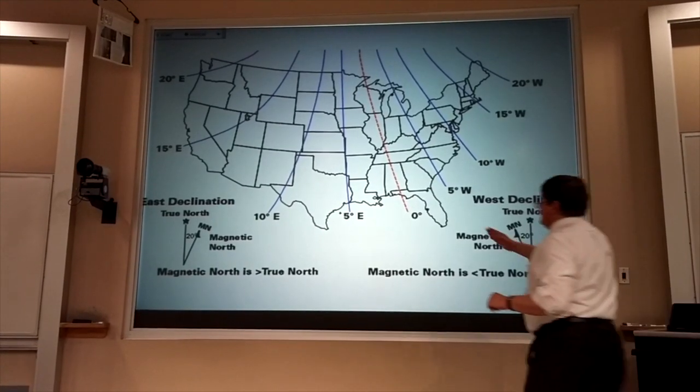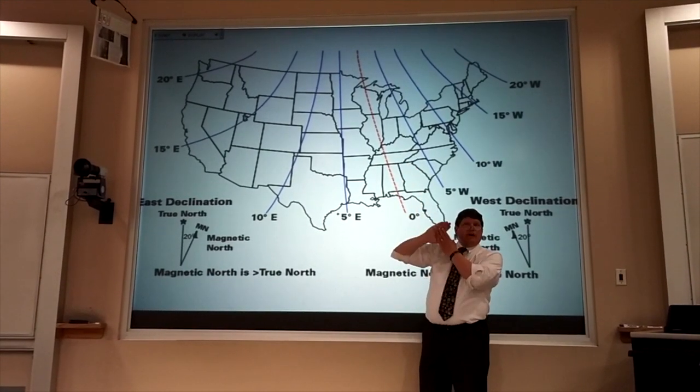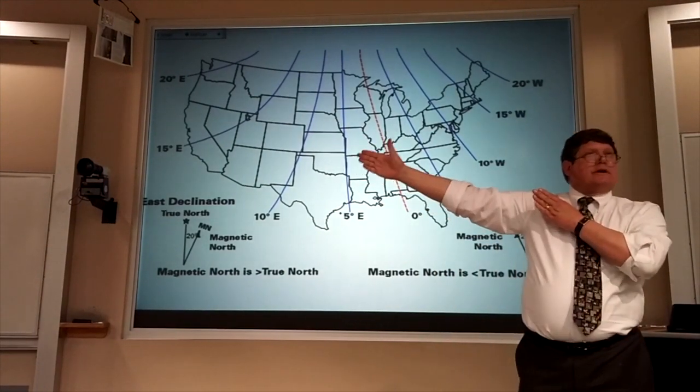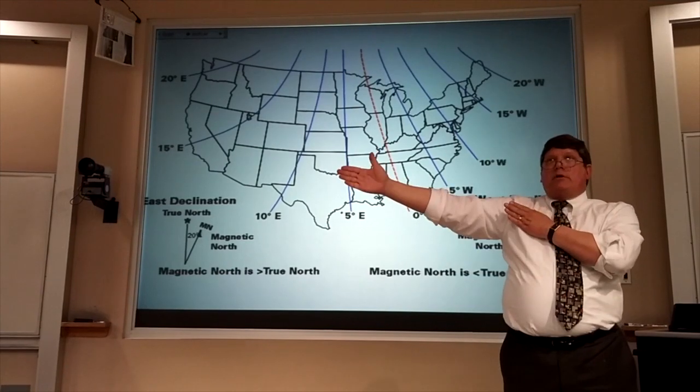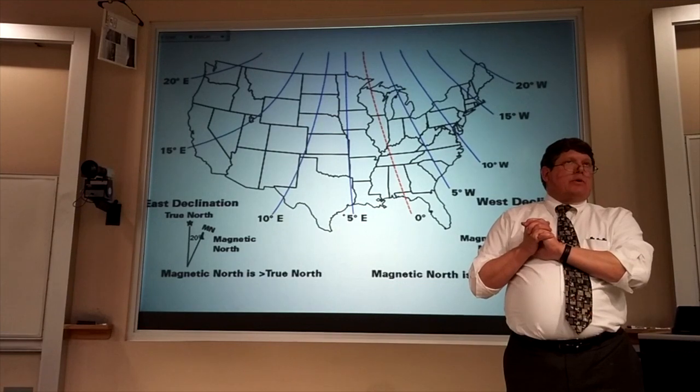Now, if you're lucky enough to live along this red line, say in Chicago, when you look at Hudson Bay or towards Hudson Bay, you're also looking towards Santa Claus's workshop. And so for those people, magnetic north and true north are in the same direction, by coincidence.